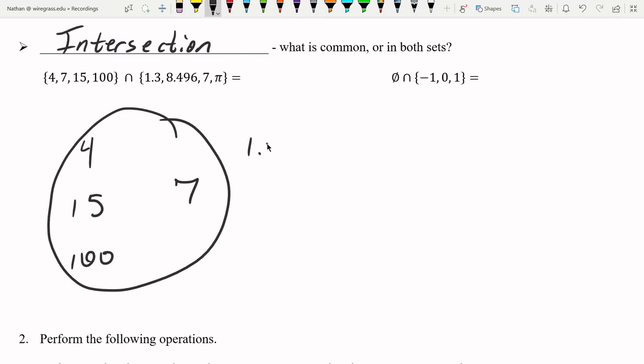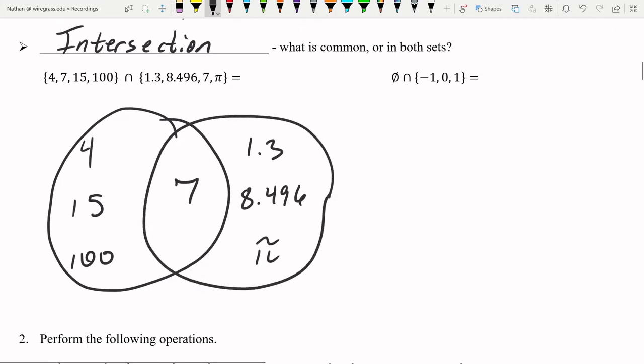And then the second set is this guy here. And of course, the thing that's in common is the overlap or the intersection of the two sets. And the only thing that's in both is 7.